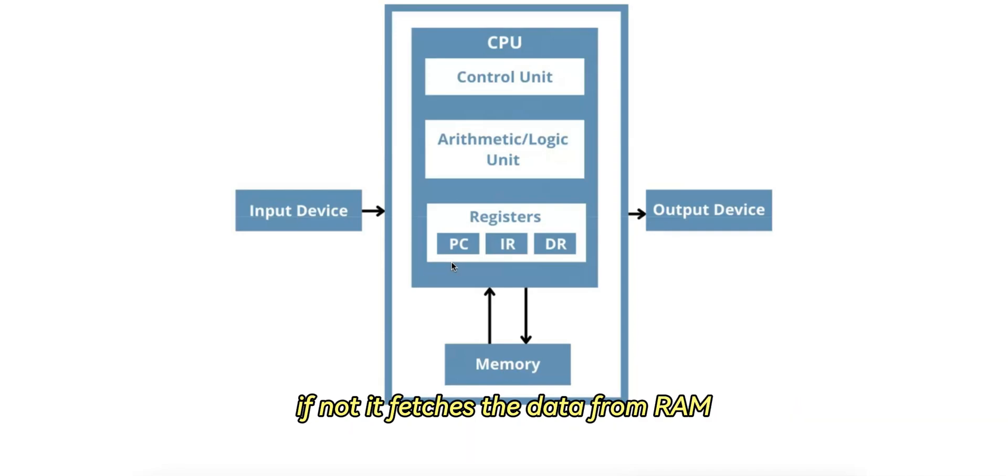The CPU performs the required operation, for example addition or multiplication, using the Arithmetic Logic Unit, or ALU, and registers. The ALU takes the operands from the registers, performs the operation, and stores the result back in a register.